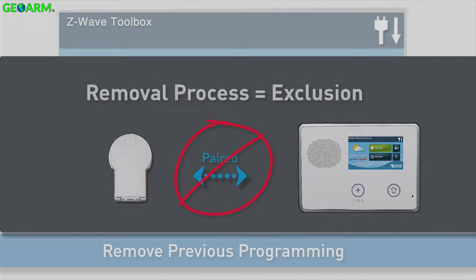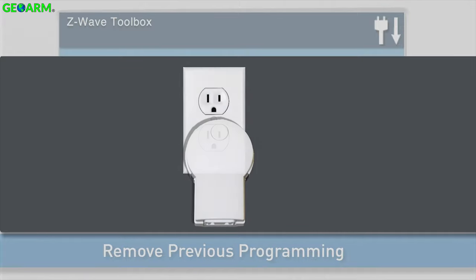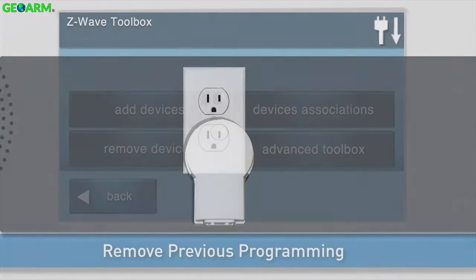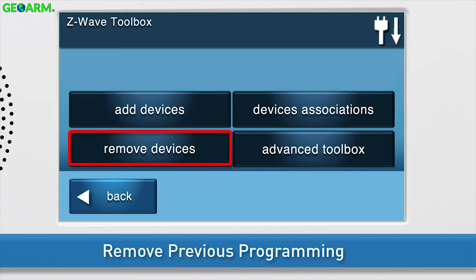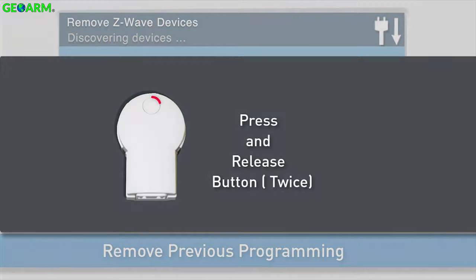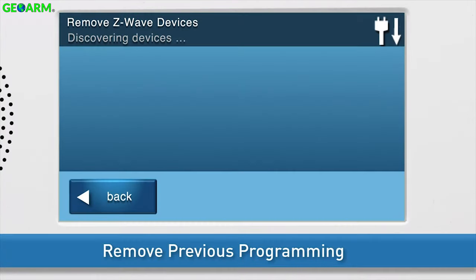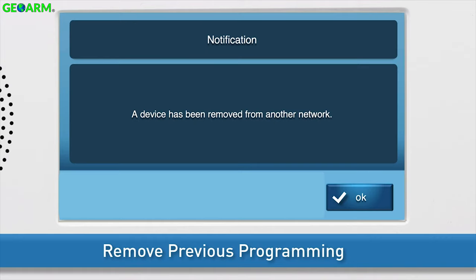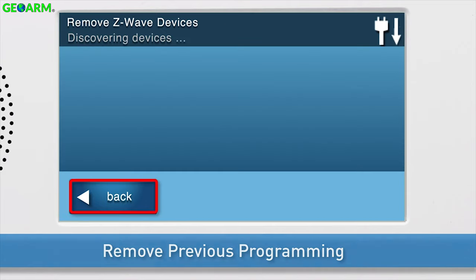To begin the removal process, first connect the Lamp Module to the nearest AC outlet. Select the Remove Devices button — the Remove Z-Wave Devices screen will appear. Press and release the button on the front of the Lamp Module twice. You will see a notification on screen that the device was removed. Press OK, then press Back.